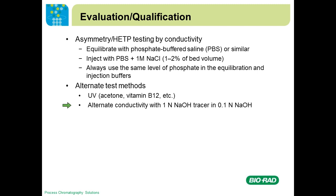Some people pack in 1 N sodium hydroxide, then flush with 0.1 N sodium hydroxide and use 1 N as a tracer. Others use a 1 N sodium hydroxide background buffer and inject 0.1 N to get an inverted conductivity peak. It's really up to you.